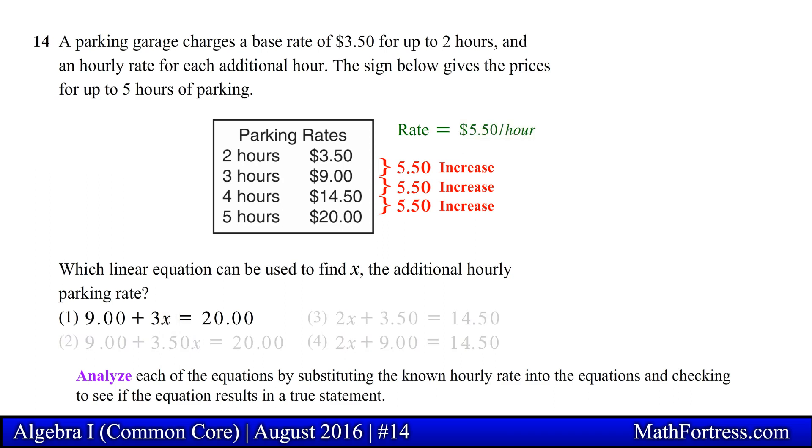For example, the first option has the linear equation 9 plus 3x equals 20. If x represents the hourly parking rate after the second hour, then 3 times 5.50 plus 9 should equal 20. But notice that the left side of the equation does not simplify to 20. This results in a false statement, so this equation cannot be our answer.